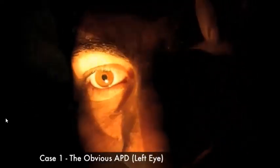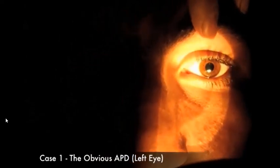Note that when the light is swung to the left eye, there is immediate pupillary dilation. Therefore, we can conclude that this patient has damage to the afferent limb of the light reflex pathway in the left eye.